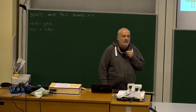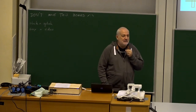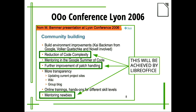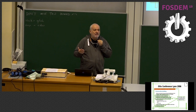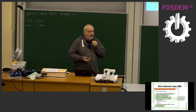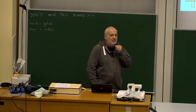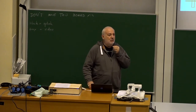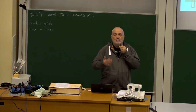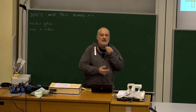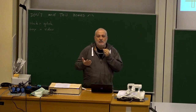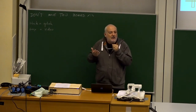In 2005, community members started to challenge Sun on things that were not really working. There was a community council with seven members: three elected by Sun, three elected by the community, and one community manager who was supposed to be impartial. In Italian we say 'zerbino' — the doormat where you clean your feet. That was the position of the community manager versus Sun — even more loyal to Sun than Sun employees. So all discussions were four to three, with four votes always going to Sun.